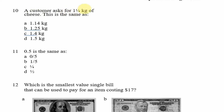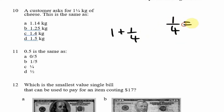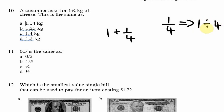Question 10: A customer asks for one and a quarter kilograms of cheese. This is the same as what? One and a quarter means one plus one-quarter. Since the answers are all in decimal, we need to convert the fraction one-quarter to a decimal. One divided by four, written in long division format: four into one goes zero times. Adding a decimal point and a zero makes it 10.